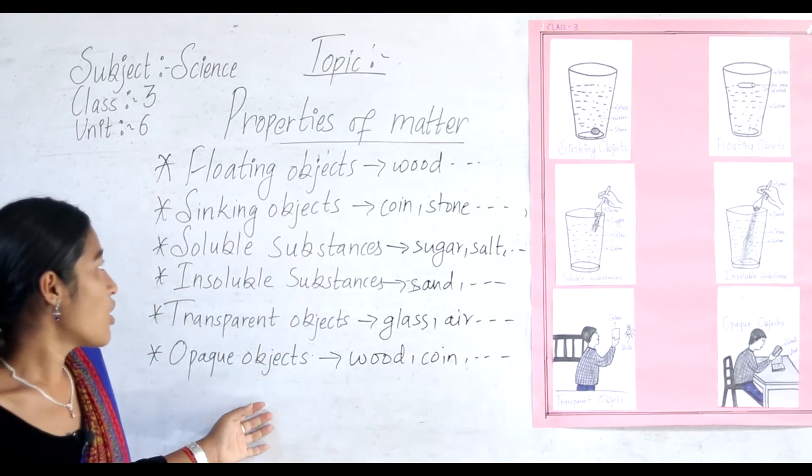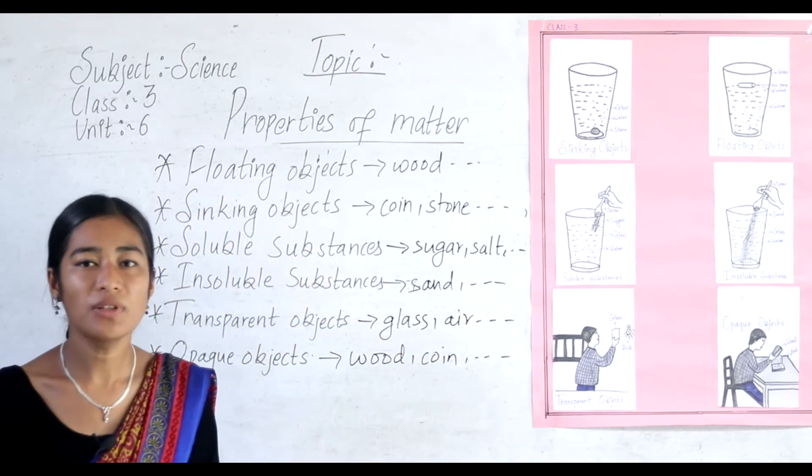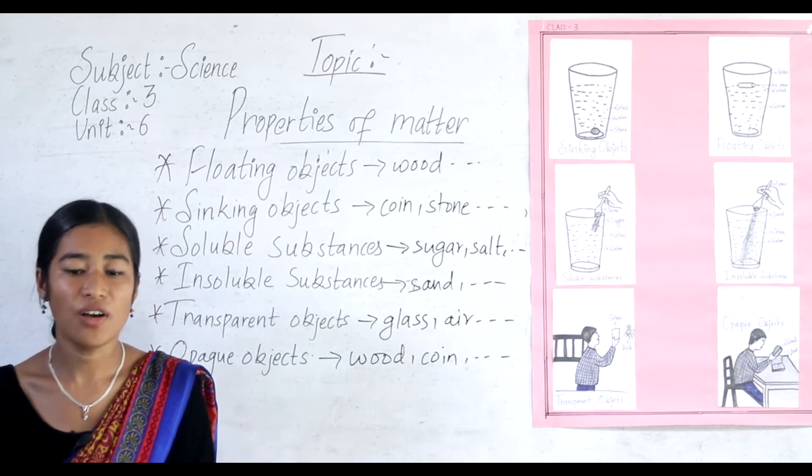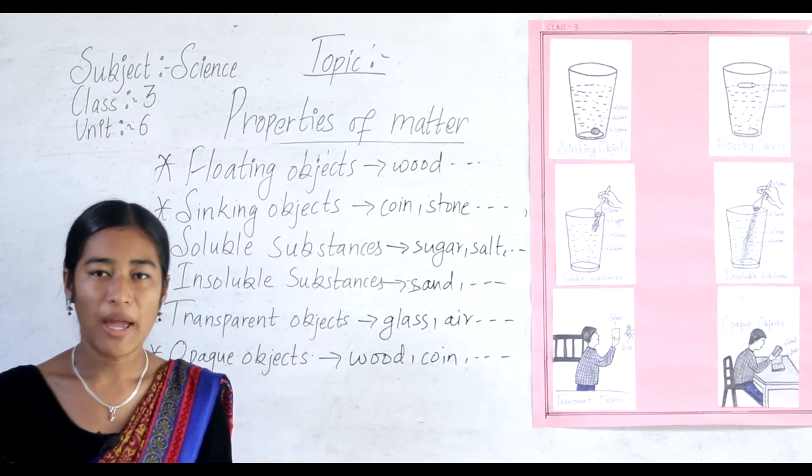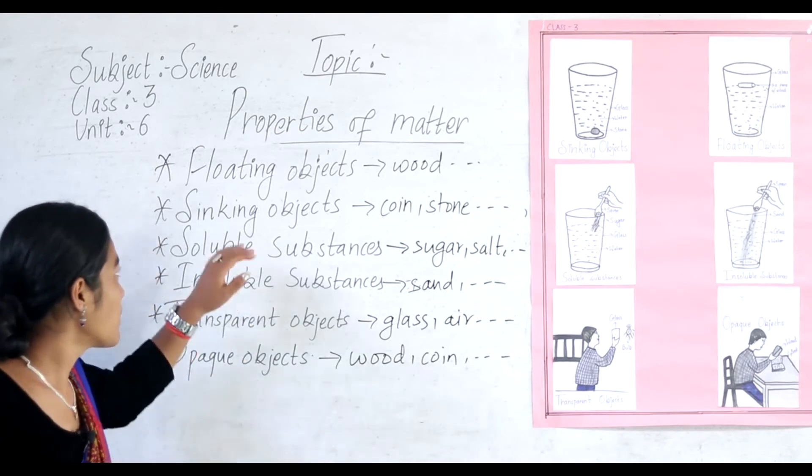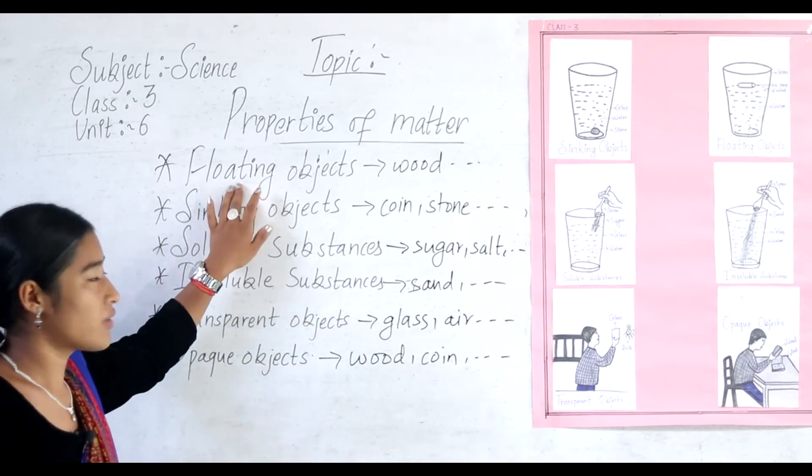And lastly: opaque objects — those objects through which light cannot pass easily. For example, wood, coin, marble, etc. So these are some of the useful properties of matter.